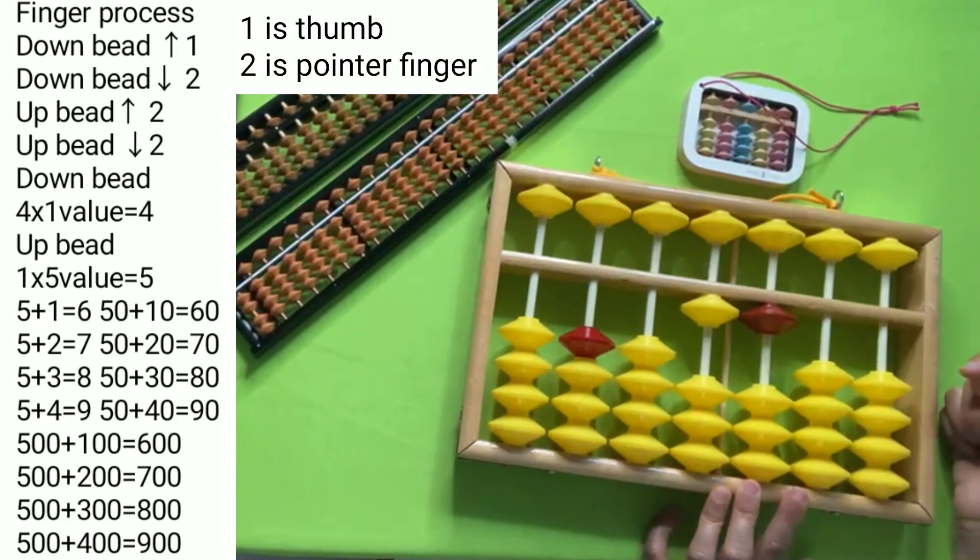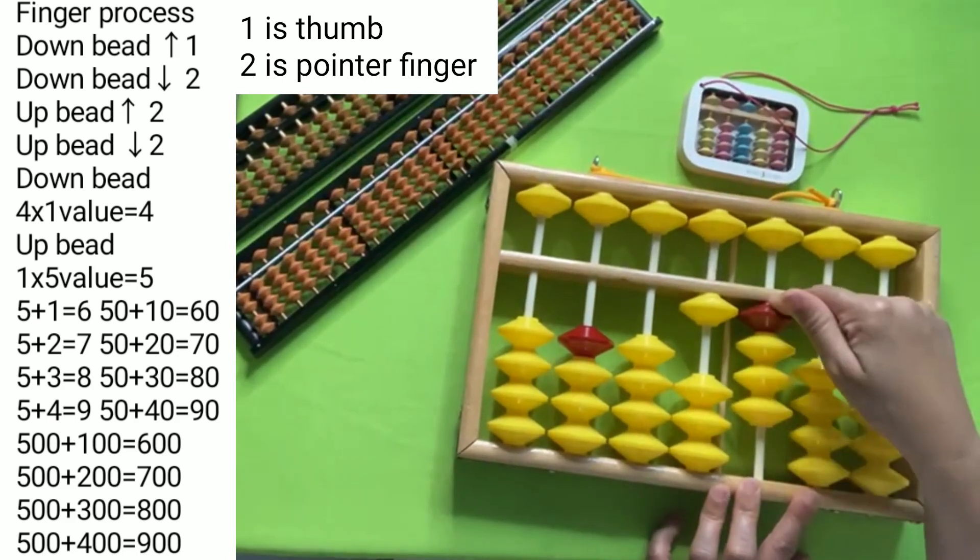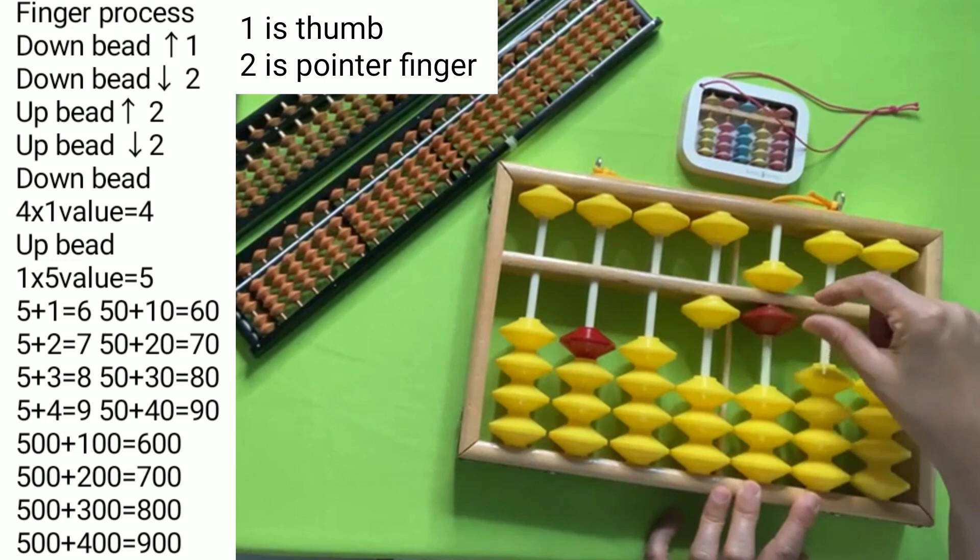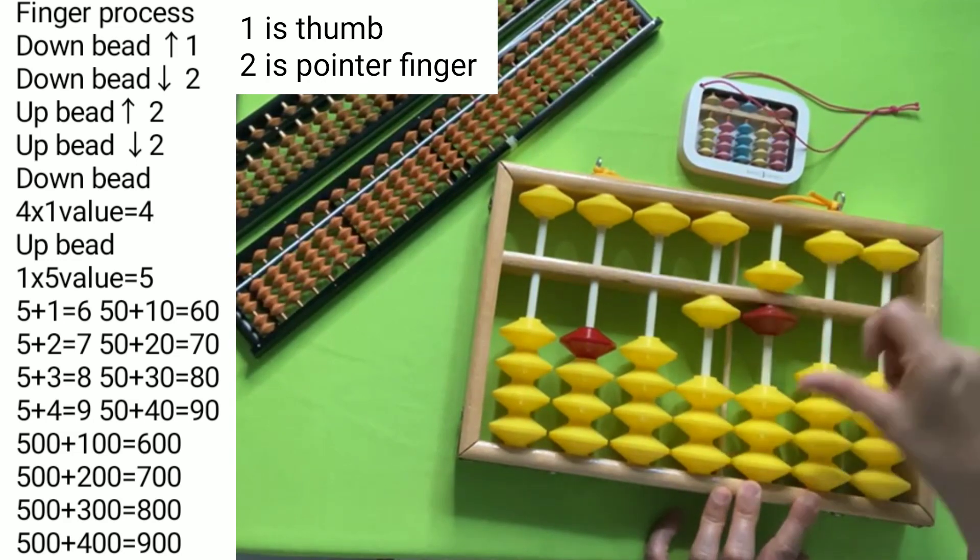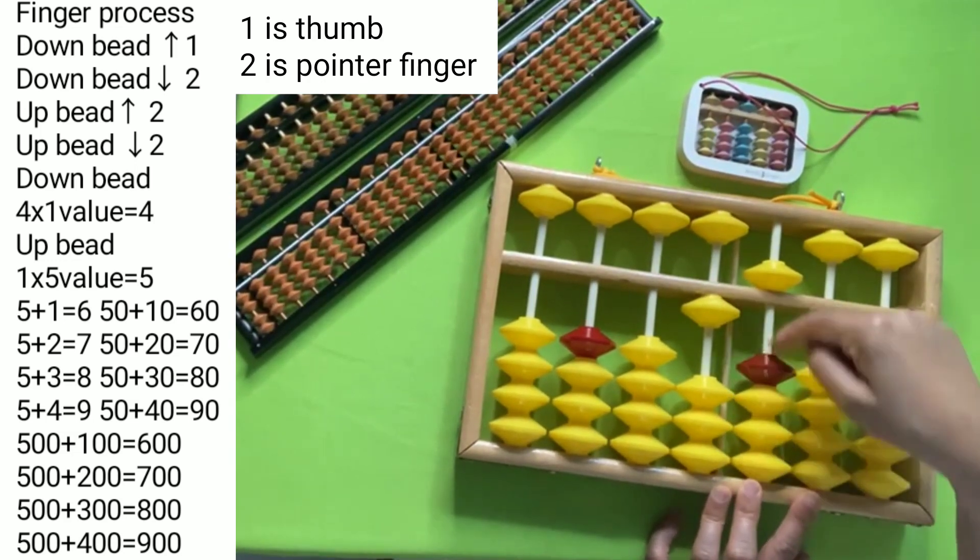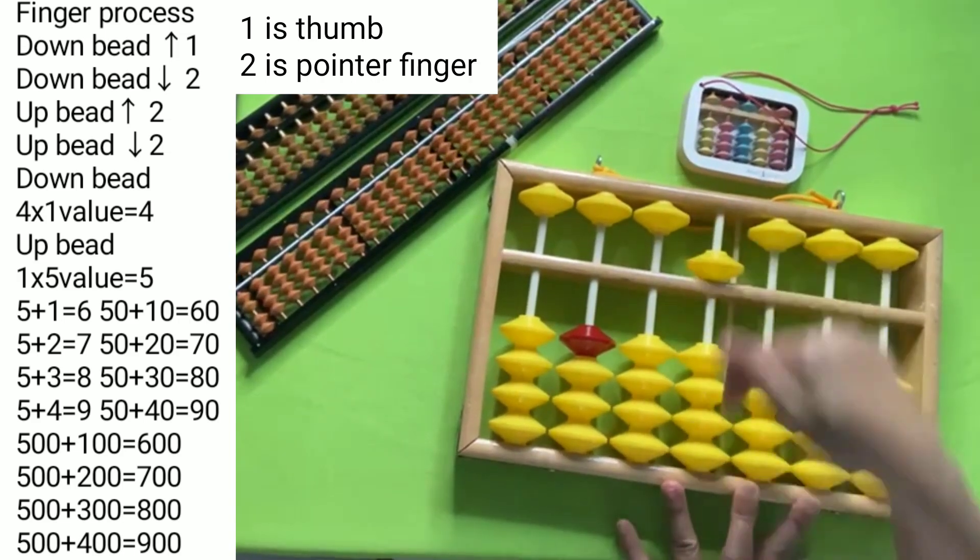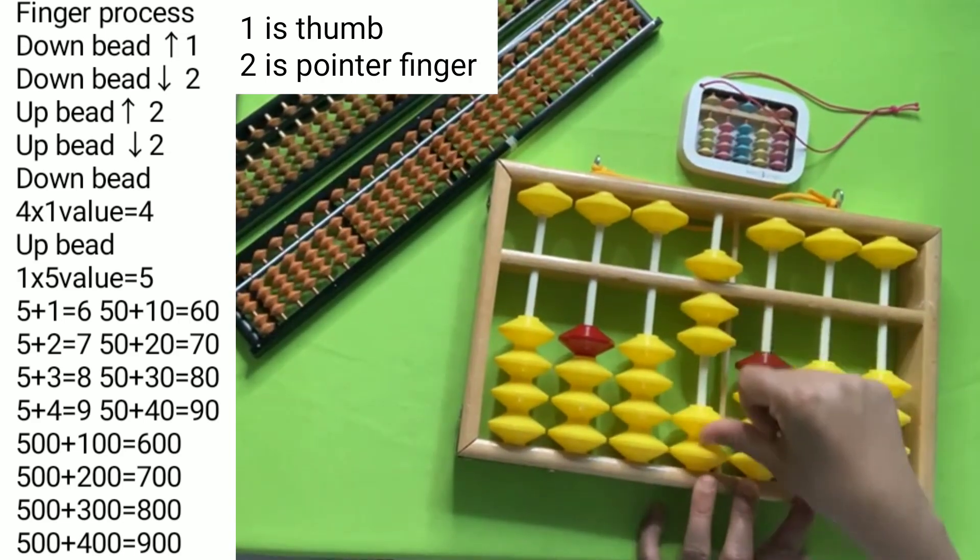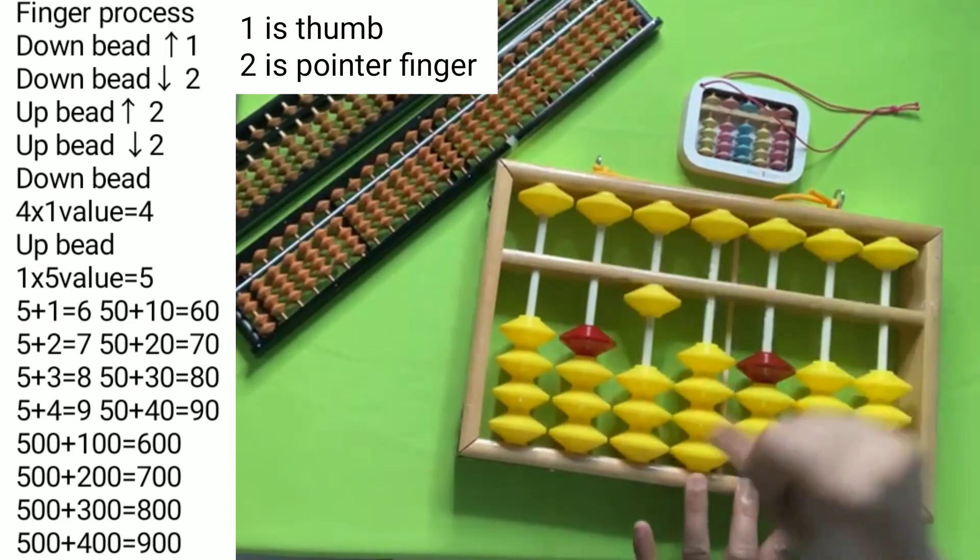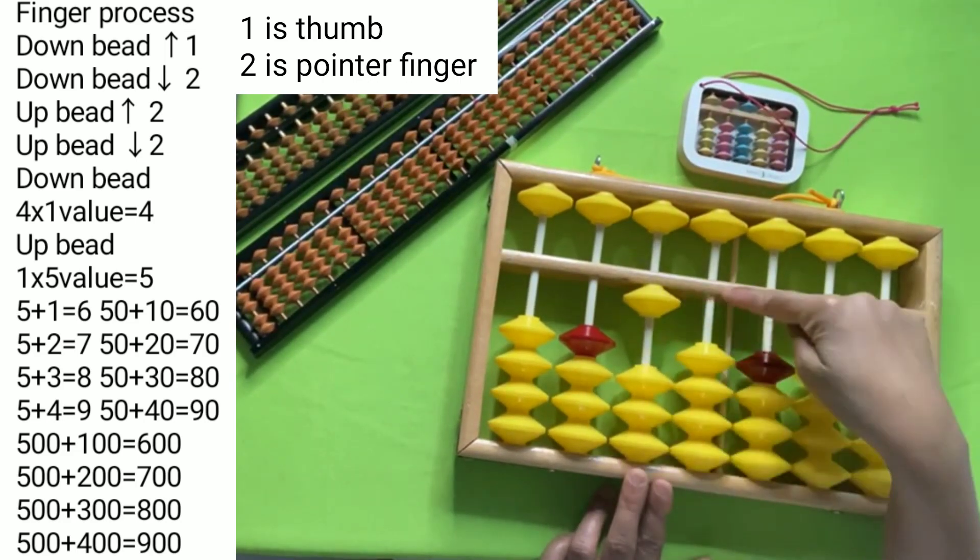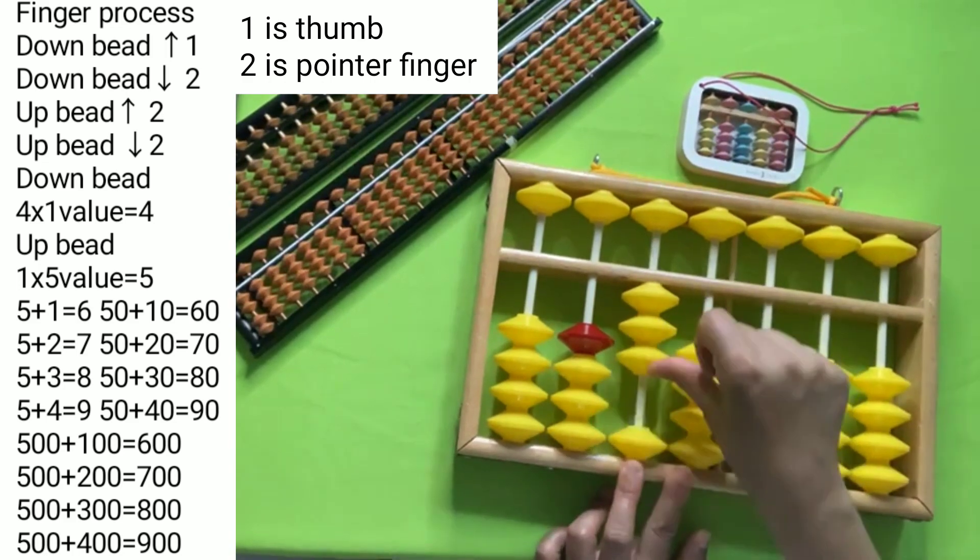And one, one - eleven, twelve, thirteen, fourteen, and one five - fifteen. And add one, this is six one - sixteen, seventeen, eighteen, nineteen, and twenty. Two zero - twenty, thirty, forty, and this is fifty, sixty, seventy, eighty, ninety, and this is one hundred.